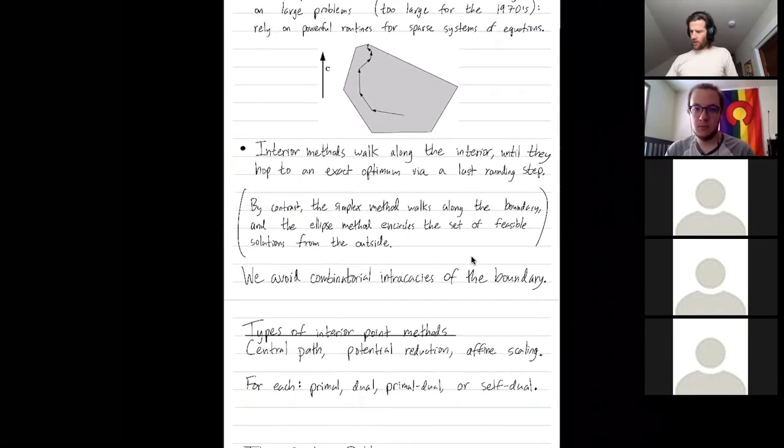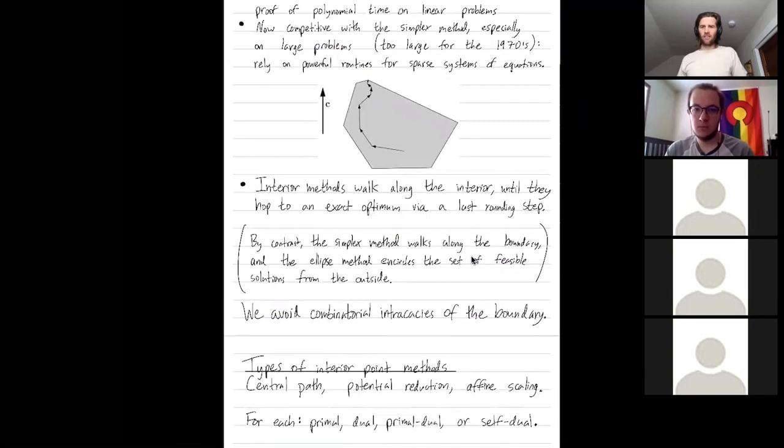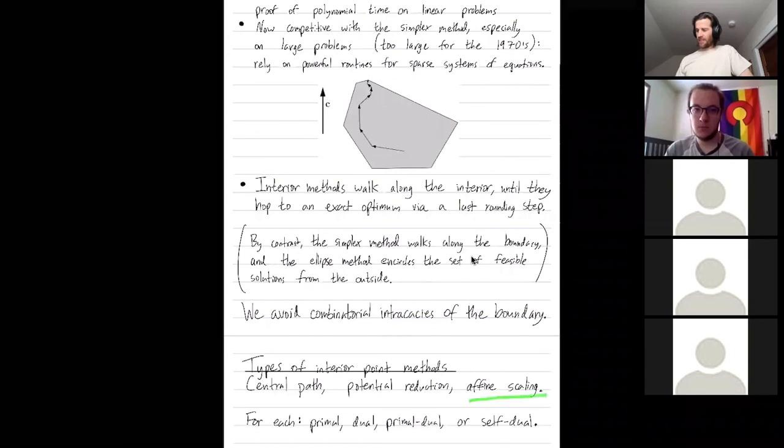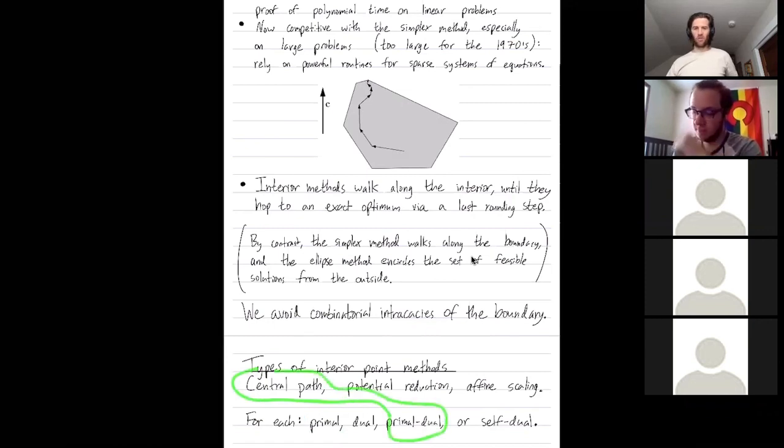The only other thing I want to say in this video is that there are different types of interior point methods. We'll talk about the central path. We won't talk about the potential reduction method, nor will we talk about the affine scaling method. And for each of these methods, you could consider the primal version, the dual version, the primal dual version, or the self-dual version. My next video will be about the central path interior method, just the primal formulation. And then the third video today, the last one, will be about the central path method in the primal dual formulation.